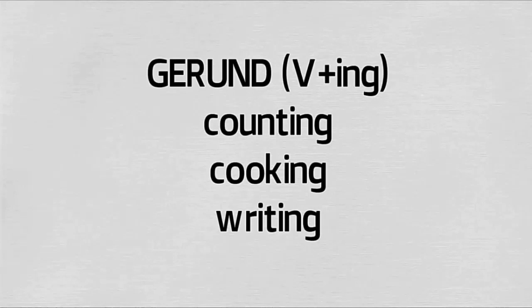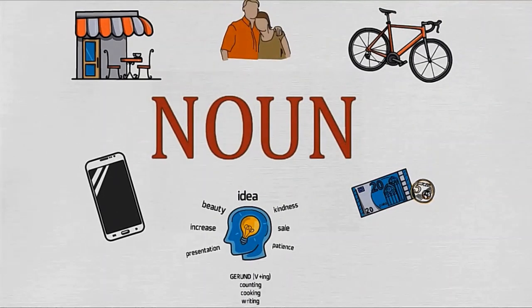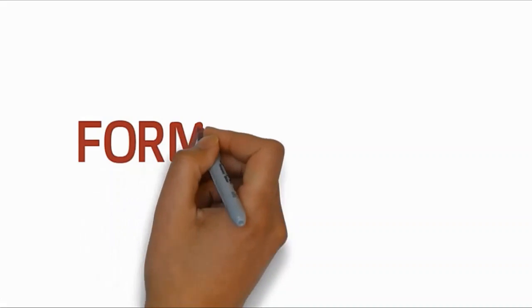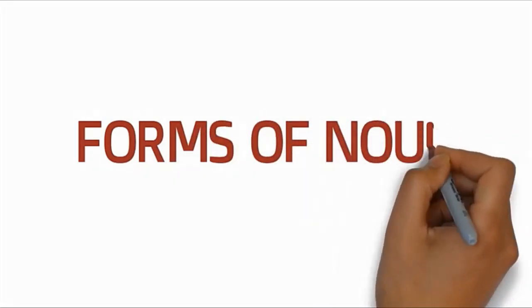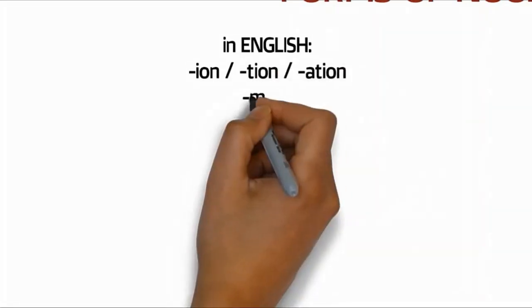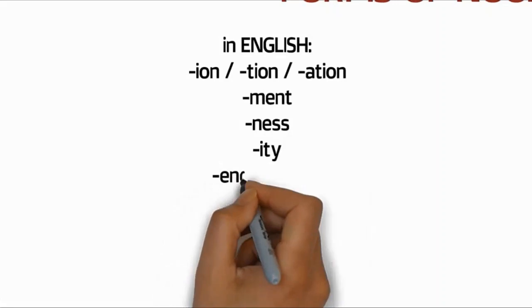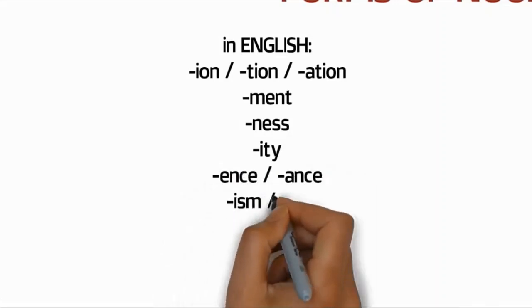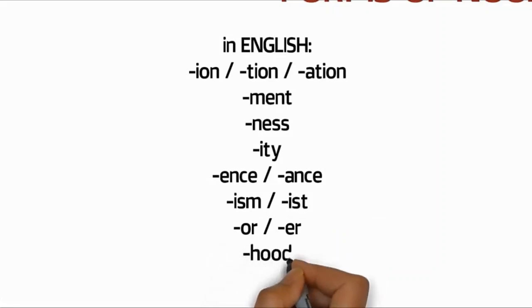Now let's see the characteristics of noun forms. The forms of noun in English and Indonesia. First, in English, what are the characteristics of nouns? We look at the word endings. There are endings -ion or -tion or -ation. There's -ment, -ness, and then -ism or -ist, and -or or -er, and -hood. Examples: kindness, quality, plagiarism, author, reader, teacher, brotherhood, and sisterhood are all nouns.